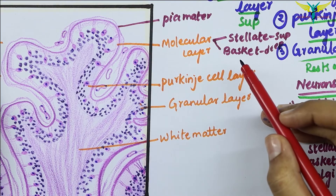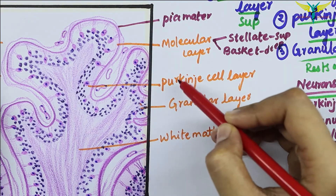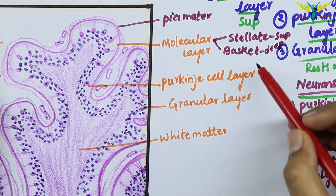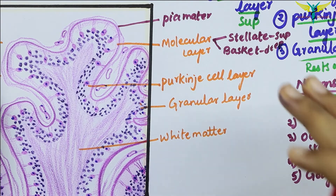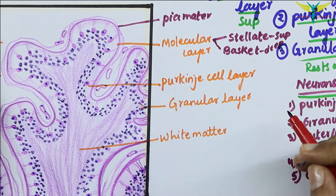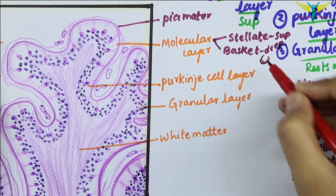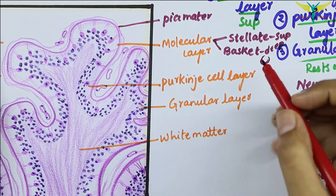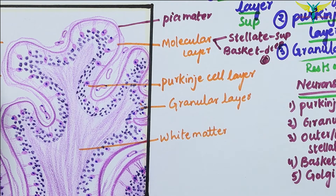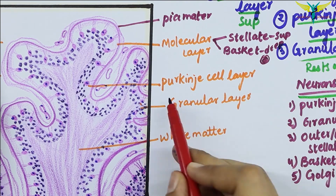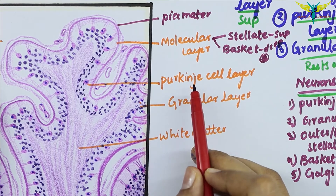The basket cells lie deeper in the molecular layer of the cerebellar cortex. They receive recurrent collaterals from the Purkinje cell layer. The basket cells are called basket cells because the axons of these cells are branched and they form a network, which is why they are called basket cells.